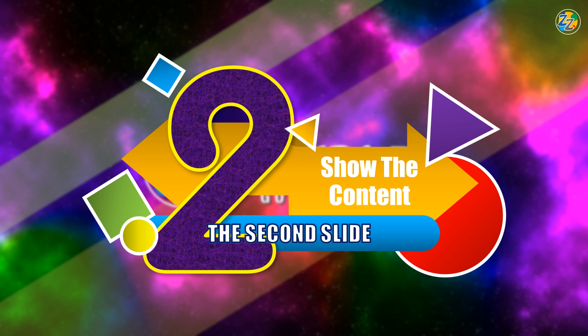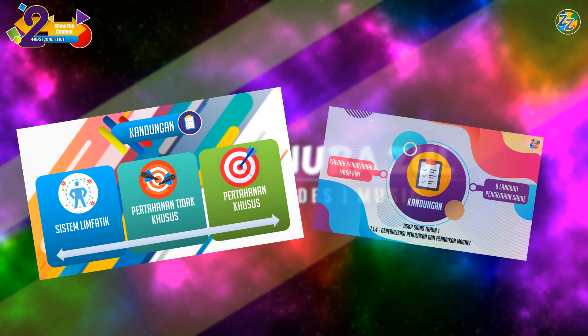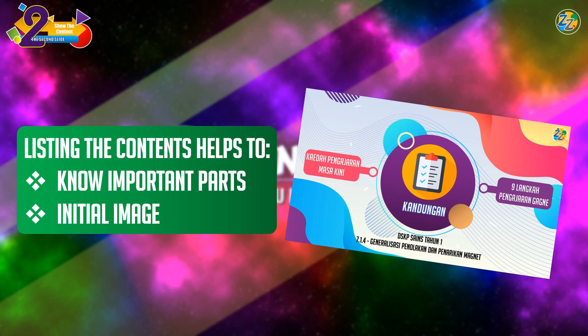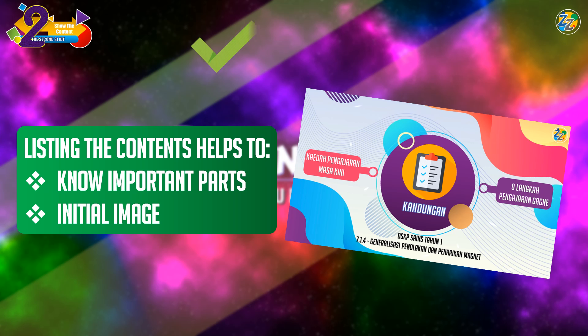Moving on to number 2: Show the contents of the presentation. On the second slide, list out all the subtopics of your presentation — just like the contents of a book. This helps to let the audience know the important parts of your presentation, gives an initial image of what it's about, and gives your audience something to look forward to, as they will remember the crucial points emphasized at the start.